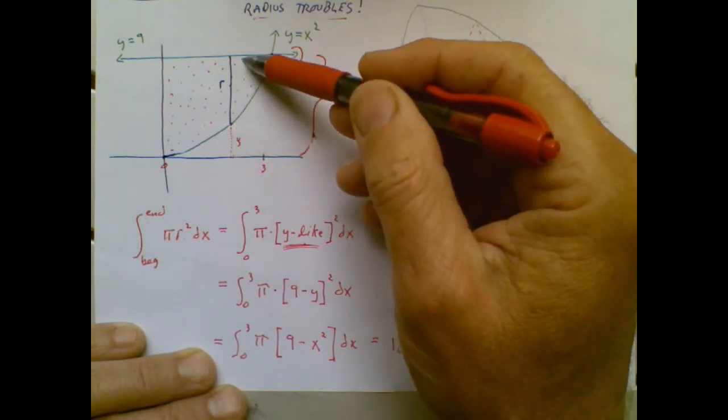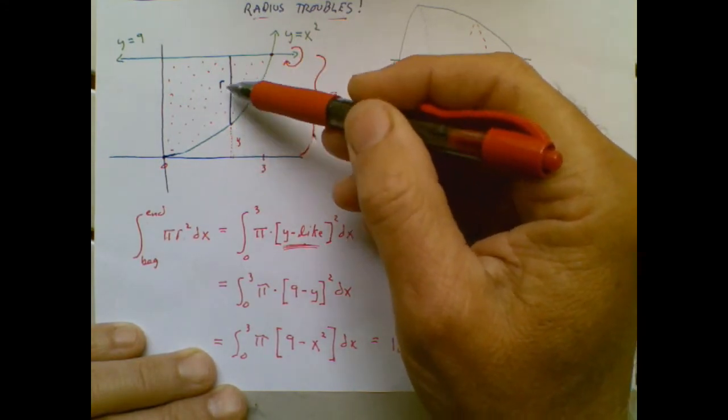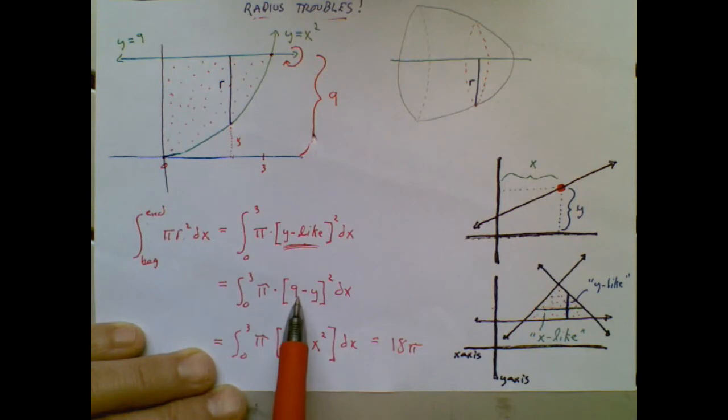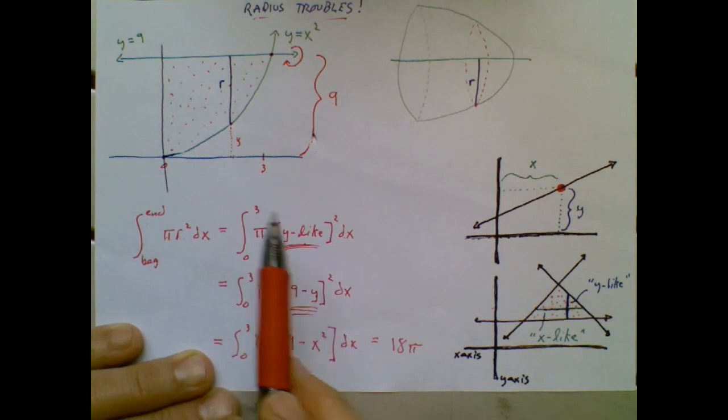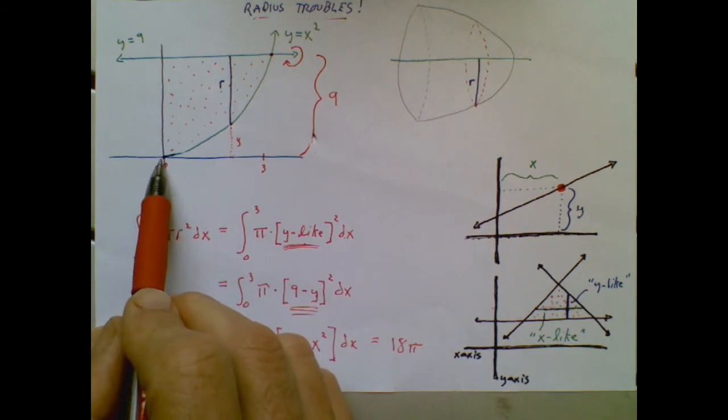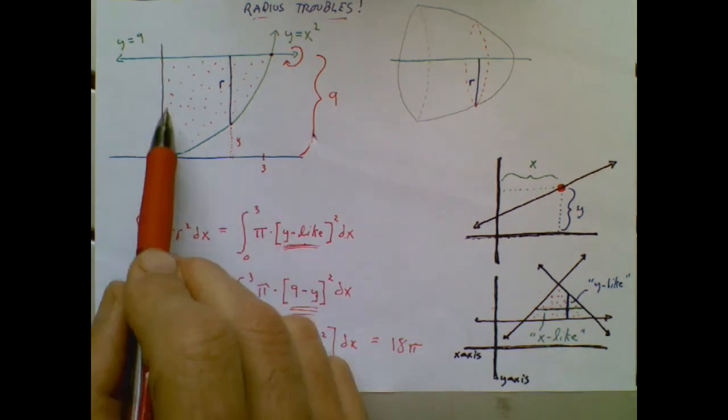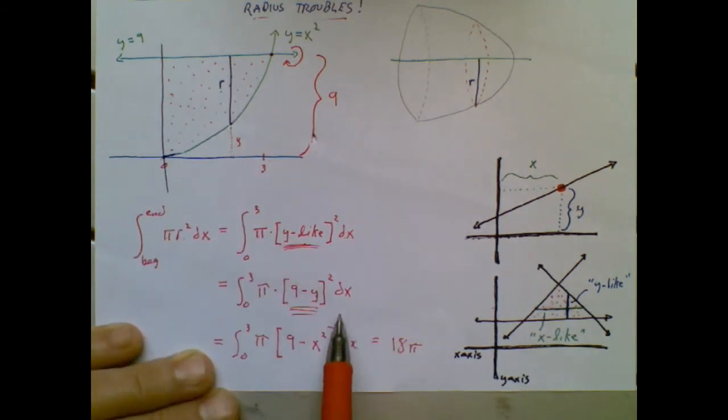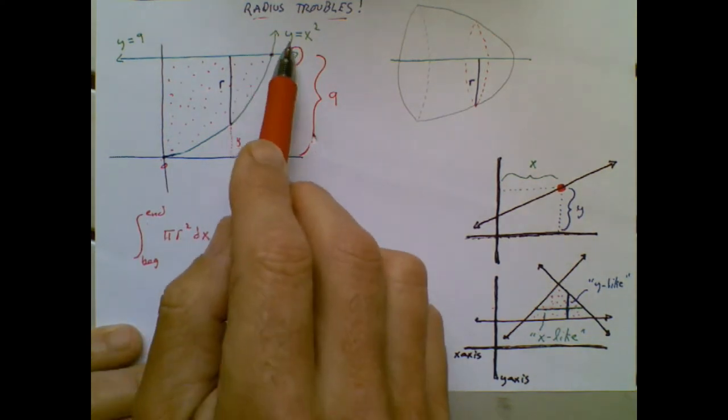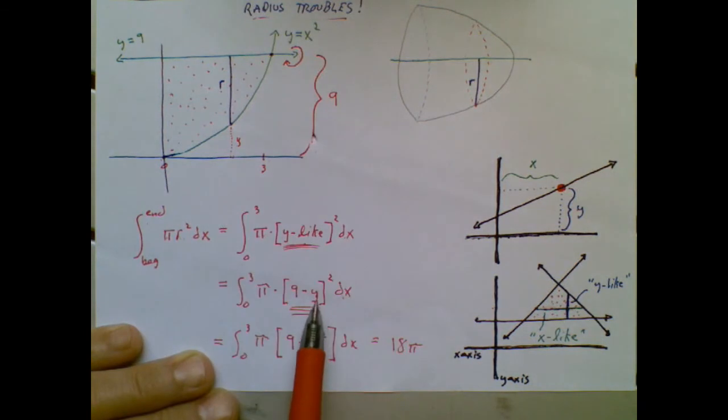And then finally, since I knew this was a dx problem, because my first slice and my last slice showed me slicing or progressing along the x-axis, I know that that y is naughty, so I take that y and replace it. Well, y is the same thing as x squared, so that y turns into that.